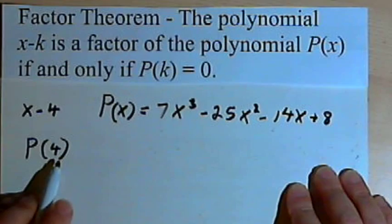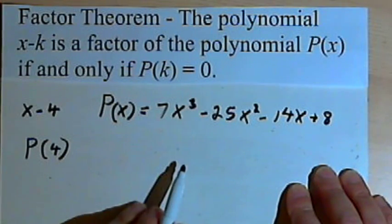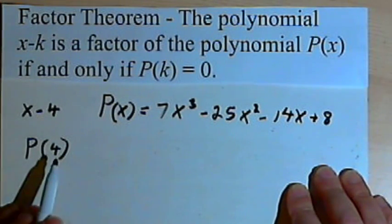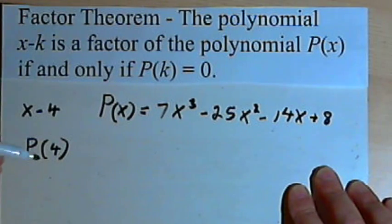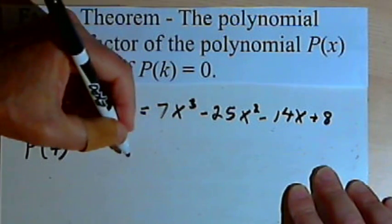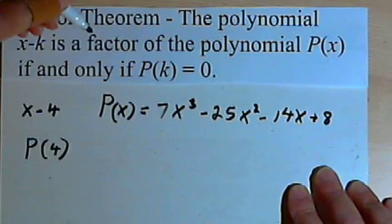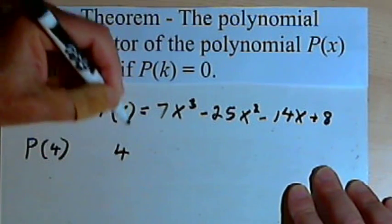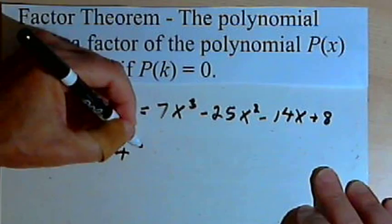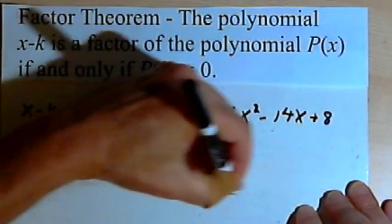Now we can use the remainder theorem and find P(4) fairly easily. The remainder theorem says that all I have to do would be to divide, using synthetic division, divide 4 into this polynomial.